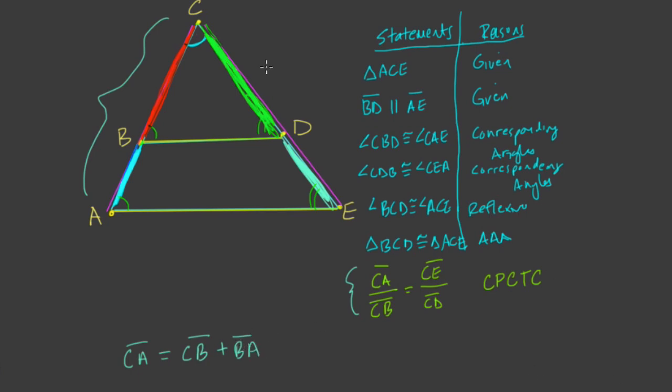And on the other side, we can say the same thing. CE is this entire side, and CE equals the sum of CD, that's this piece right here, and DE, the shorter piece.